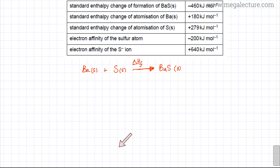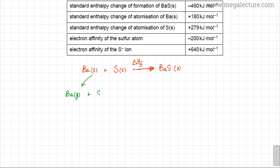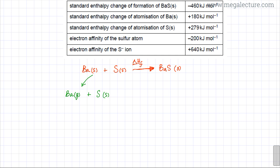Now I'm going to create another path from barium solid and sulfur solid all the way to the ionic compound to construct the Born-Haber cycle. The first step is converting barium solid into gaseous barium atoms — this is the enthalpy change of atomization of Ba. You're breaking all the metallic bonds and forming scattered gaseous barium atoms. The value is +180 kJ/mol. The enthalpy of formation value is −460 kJ/mol.